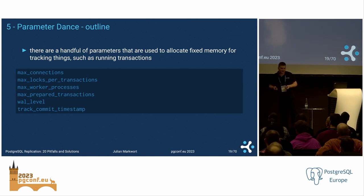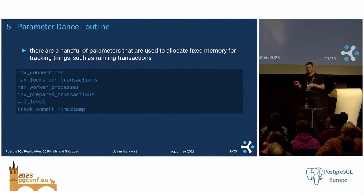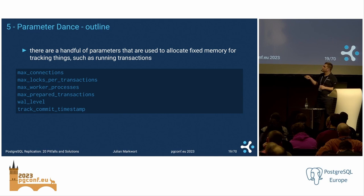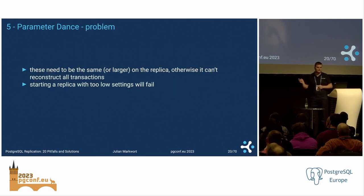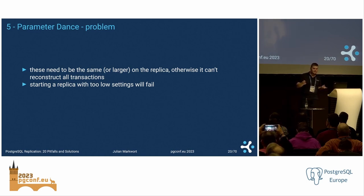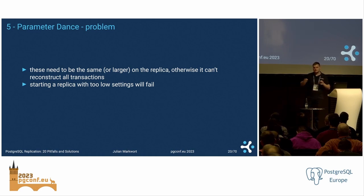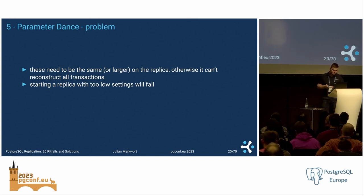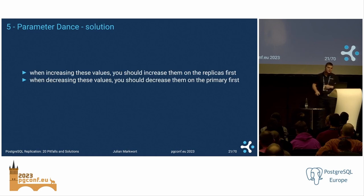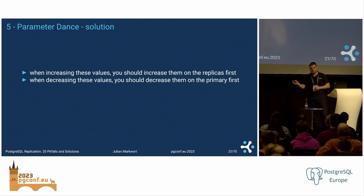The next pitfall is what I call the parameter dance. Some allocations are based on parameters passed to PostgreSQL before startup. All of these parameters need a restart to apply, and the most important one people stumble across is max_connections. The replica needs to reconstruct all transactions and locks running on the primary, so it needs the same space in memory. All these arrays need to be sized at least as large as on the primary, so keep these values as high or higher on your replicas. When increasing these values, increase them at the replica first; when decreasing, decrease them at the primary first.